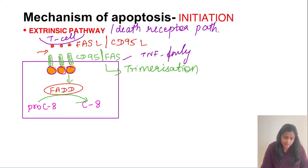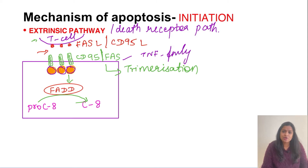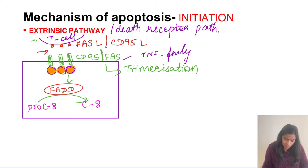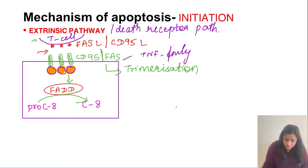One thing to highlight here: this was an example of physiological apoptosis. T cells are responsible for killing virus-infected or tumor cells. So the extrinsic pathway is the major pathway in virus killing and tumor cell killing. We have now covered the extrinsic pathway, where caspase 8 was finally activated.